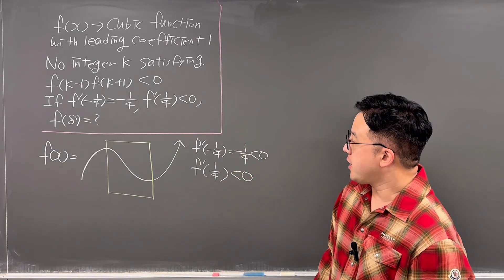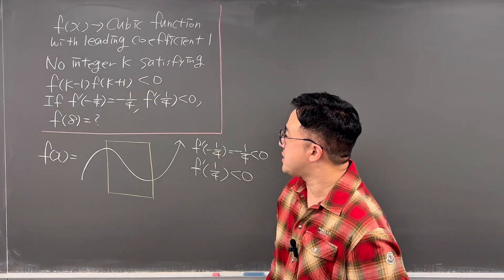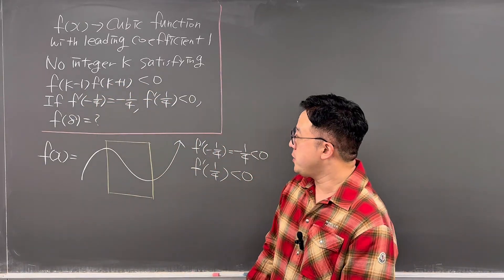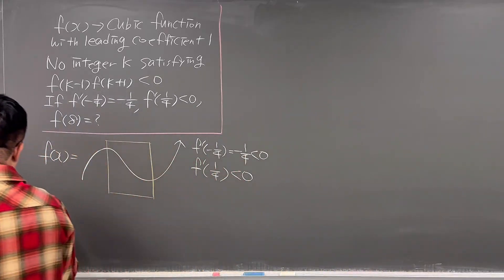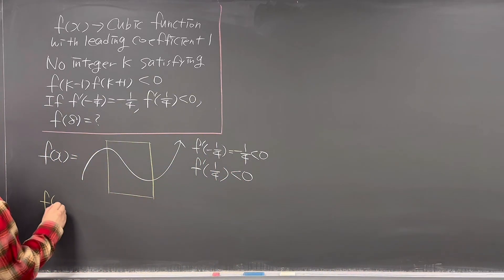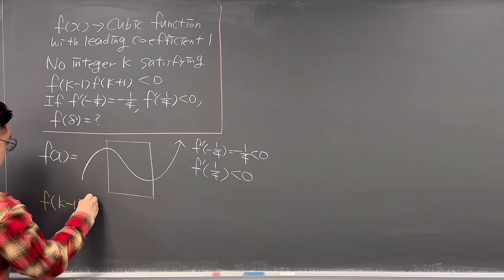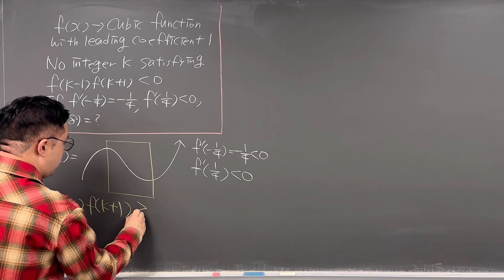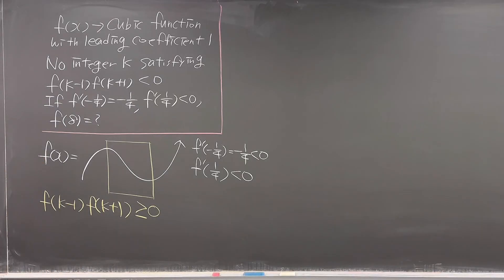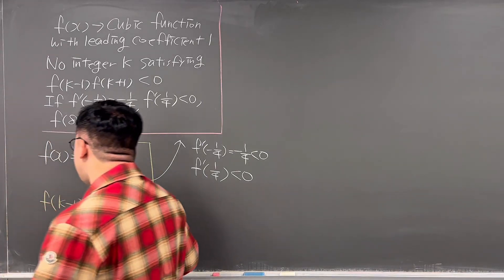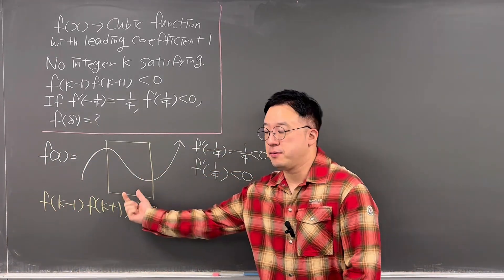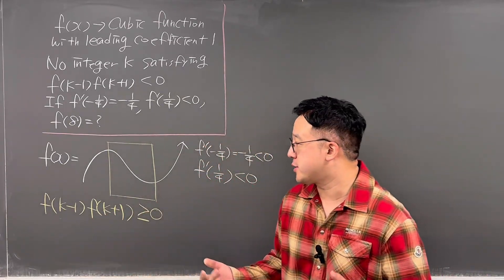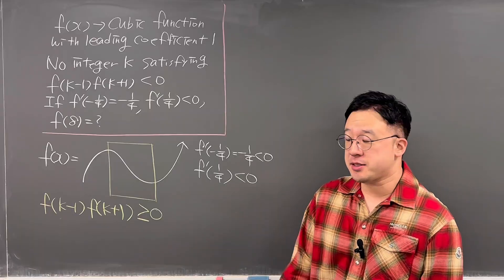The condition says there's no integer value k satisfying f(k-1) times f(k+1) to be negative. So that means f(k-1) times f(k+1) should be greater than or equal to 0. At the same time, 0 has to be included on this interval, and k-1 and k+1 are two apart, so we can talk about three cases.